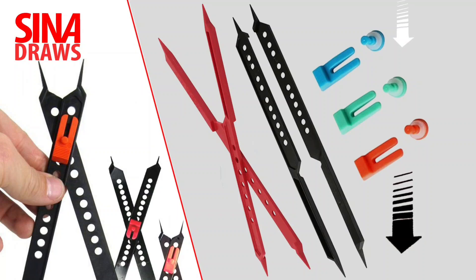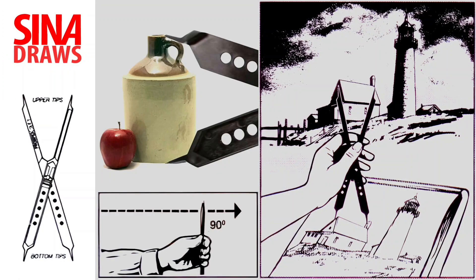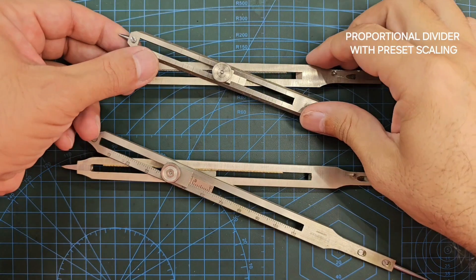If you search the term 'divider' these days you most probably are going to be offered a cheap plasticky tool something like this. Its application at best is to transfer a predetermined ratio of the subject into your artwork. You simply hold the tool aiming into the subject perpendicular to your sight and hand, find the subject between two arms, and the other side magnifies or minimizes the subject based on the ratio you have chosen. Changing the ratio is done by sliding the central pivot back and forth — the more the pivot slides toward one side, the bigger the ratio on the other side. And this is actually the only application of these plasticky dividers.